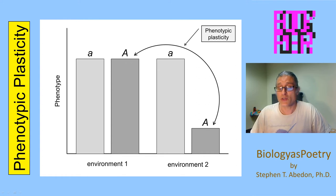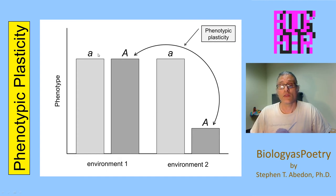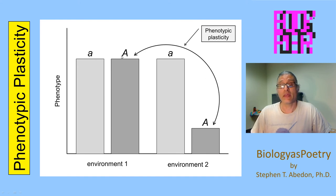One uses the term reaction norm to describe the range of phenotypes that can be associated with a given genotype. Note that I'm showing one allele here — the little a allele — as displaying a lack of phenotypic plasticity going from environment 1 to environment 2. Allele big A, on the other hand, displays one phenotype in one environment and a different phenotype in the other environment.